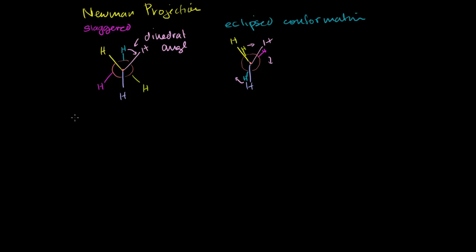In the last video, we visualized an ethane molecule with a Newman projection. What I want to do in this video is show that you can really visualize longer chains, or even cyclical ring-based carbon molecules with Newman projections as well. The next most complex molecule to study would be butane — we could do propane, but butane will be more interesting.